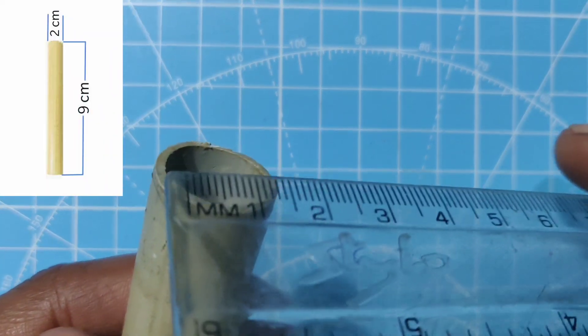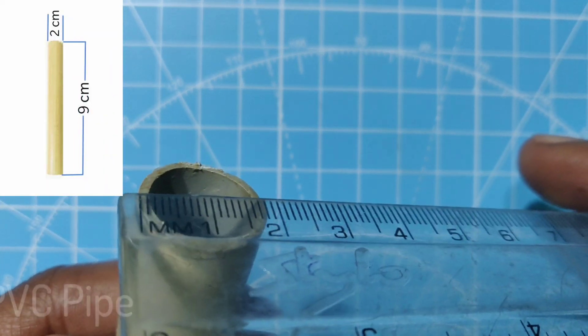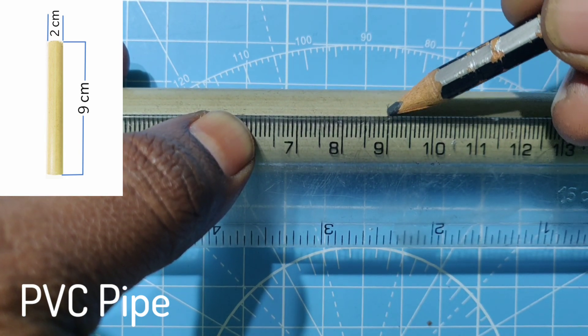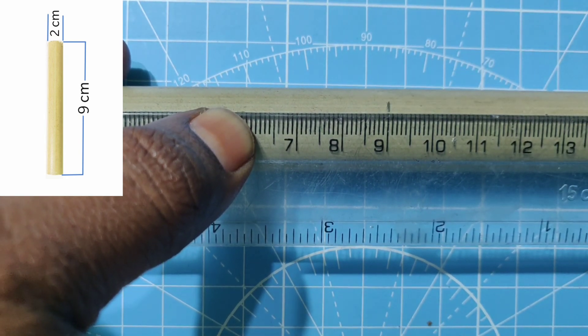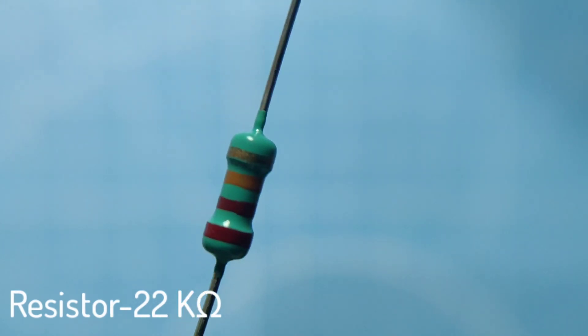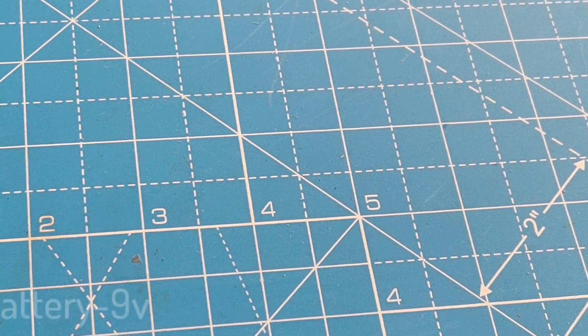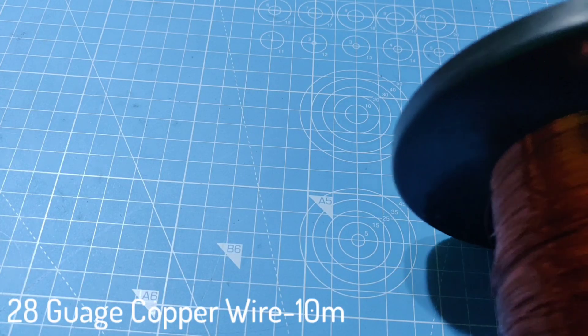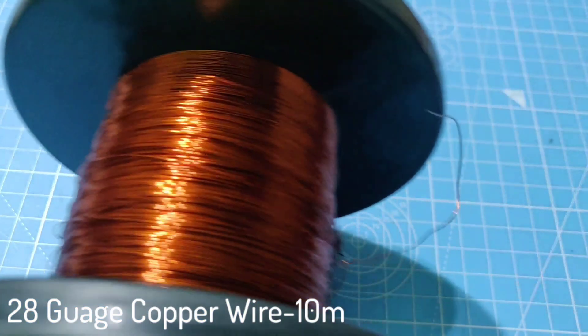Materials needed: One PVC pipe with 9 cm in length and about 2 cm in diameter. One 2N2222 transistor. One 22 kilo ohm resistor. One 9 volt battery and 28 gauge copper wire about 10 meters.